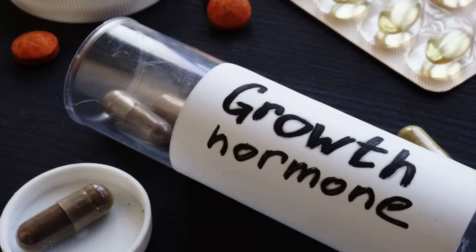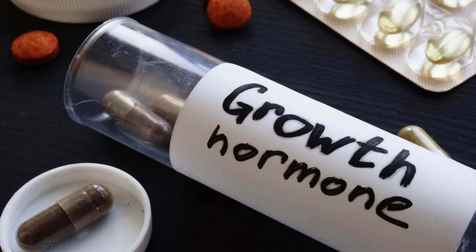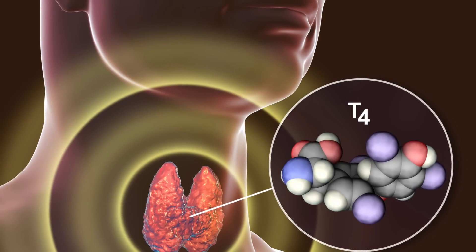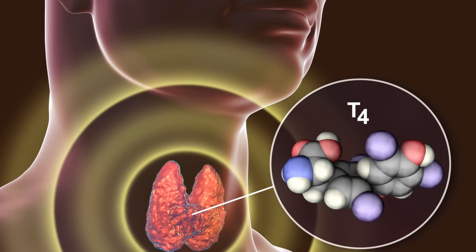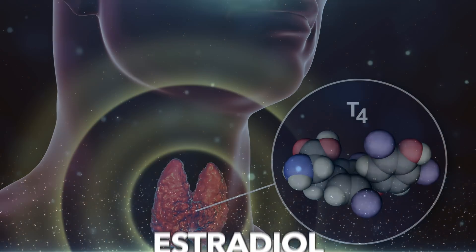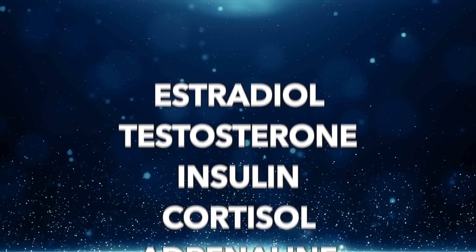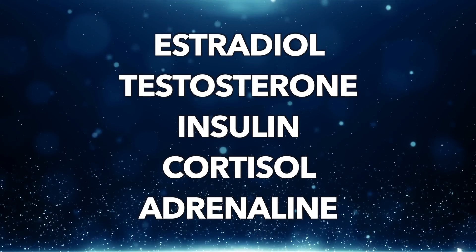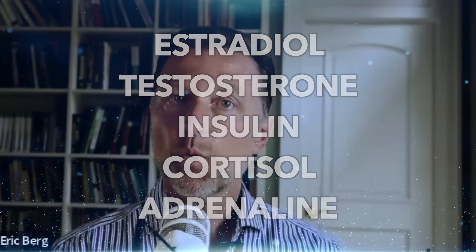Then we started isolating the hormones in the gland tissue and making them synthetic, and that's what we have now. You can get growth hormone, thyroxin (T4) in the form of Synthroid, estradiol, testosterone, insulin, cortisol, and adrenaline. This is what our treatment for the endocrine system has become.